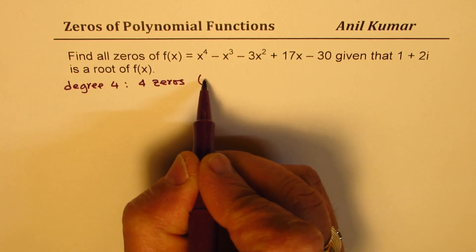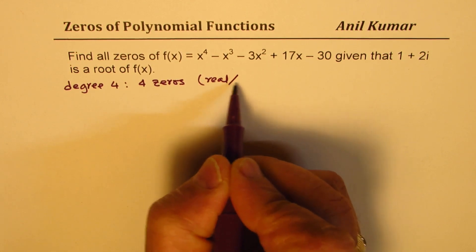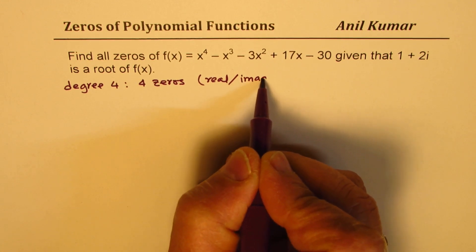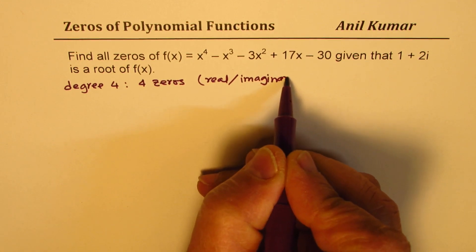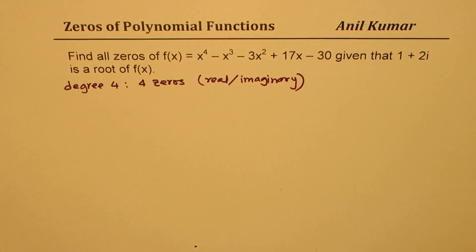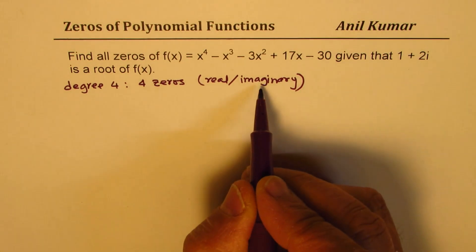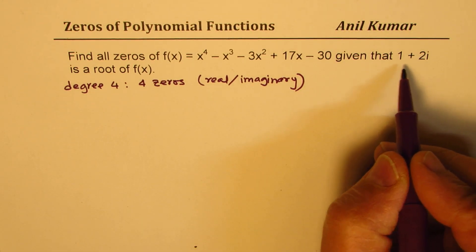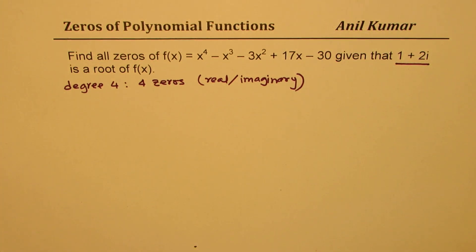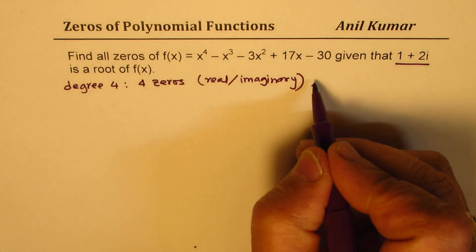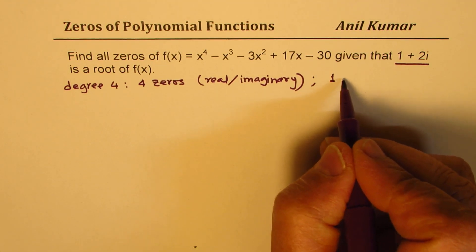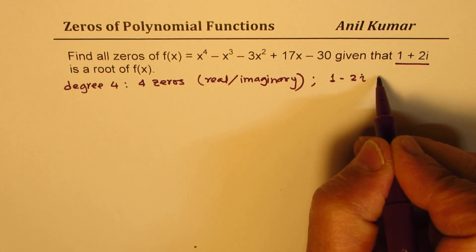Now, these zeros could be real or imaginary. If we have imaginary zeros, then they are always in conjugates. So what we are given here is 1 + 2i, which is an imaginary zero. That also means that 1 - 2i should be a zero.